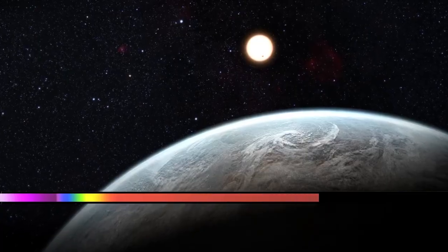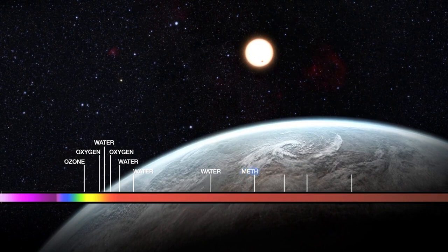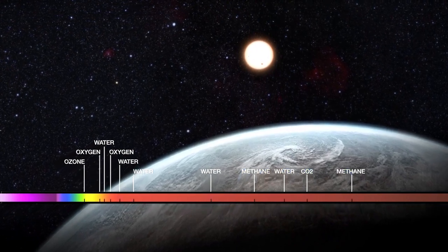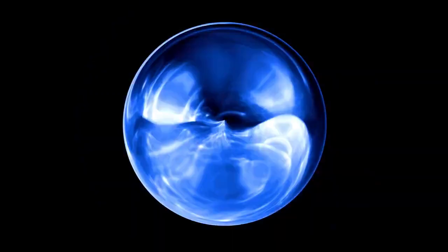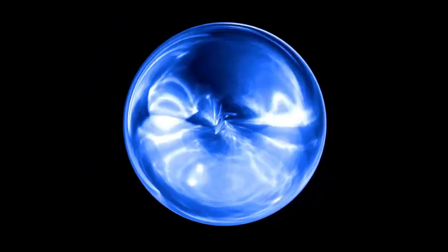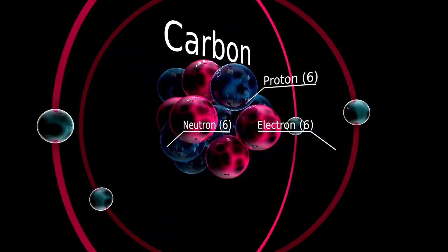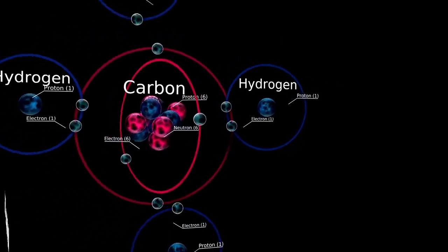However, the contraction leads to an increase in core temperature and pressure, reigniting fusion processes, particularly involving heavier elements like helium. This resurgence of fusion generates bursts of energy that temporarily counteract gravity, leading to the expansion of the star's outer layers. These periodic expansions and contractions create dramatic fluctuations in Betelgeuse's luminosity, a phenomenon characteristic of variable stars.